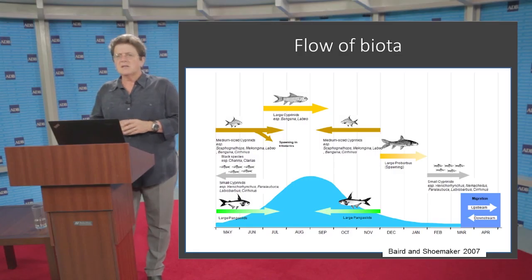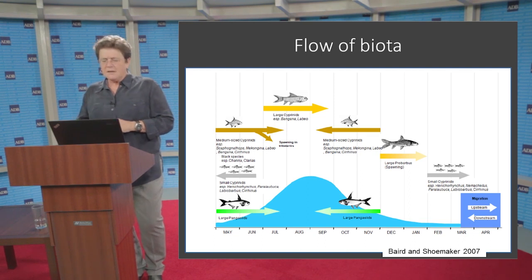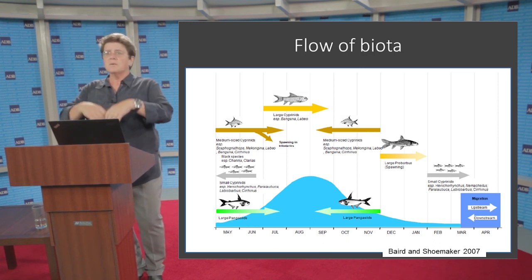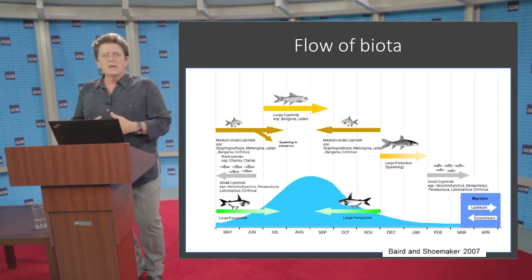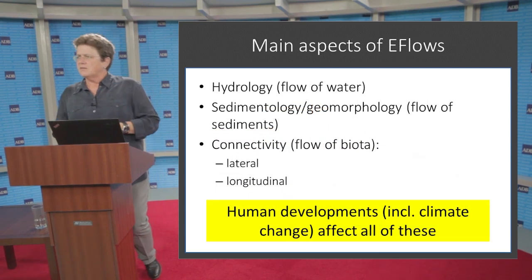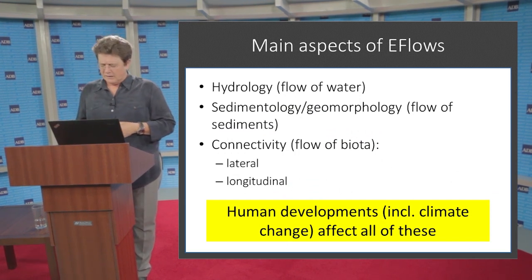The third aspect is the flow of biota. Most people think of migrating fish, but many things migrate: prawns, eels, birds, and many other biota. There's also vegetation whose seeds drift down river systems, colonizing lower reaches. A diagram of the Mekong River shows that at any given time there's a group of fish going upstream to spawn, another going downstream to spawn, and another group moving sideways. So these are very busy systems in terms of biotic connectivity, and these main aspects — hydrology, sediment, and biota — are what we must consider when thinking about environmental flows.